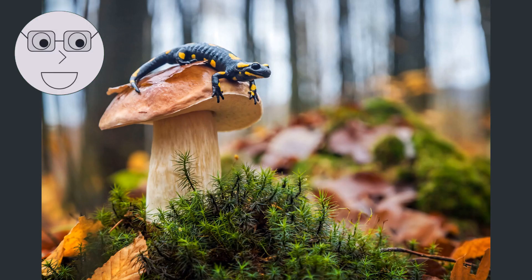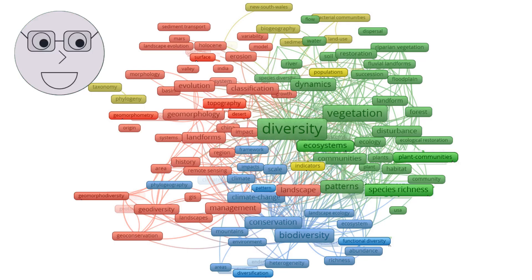The study of biodiversity. Biodiversity can be classified into three main types: genetic diversity, species diversity and ecosystem diversity. Let's take a closer look at each of these types.